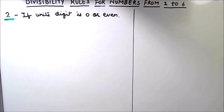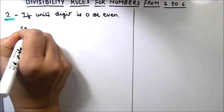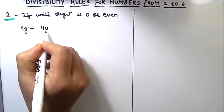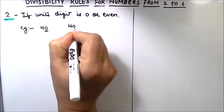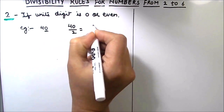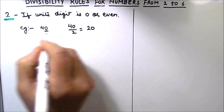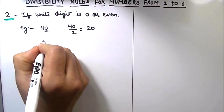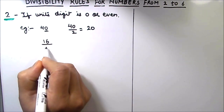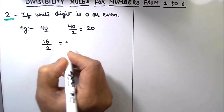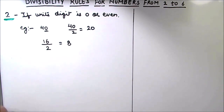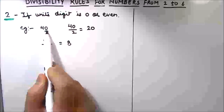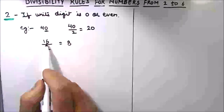Let's understand this with an example. If we have the number 40, it has 0 in the unit's digit, so 40 is fully divisible by 2 and we get 20 as our answer. Next, let's take 16, where the unit's digit is an even number. 16 is also fully divisible by 2 — 16 divided by 2 is 8. So the divisibility rule for number 2 is: if the unit's digit contains a 0 or is an even number.